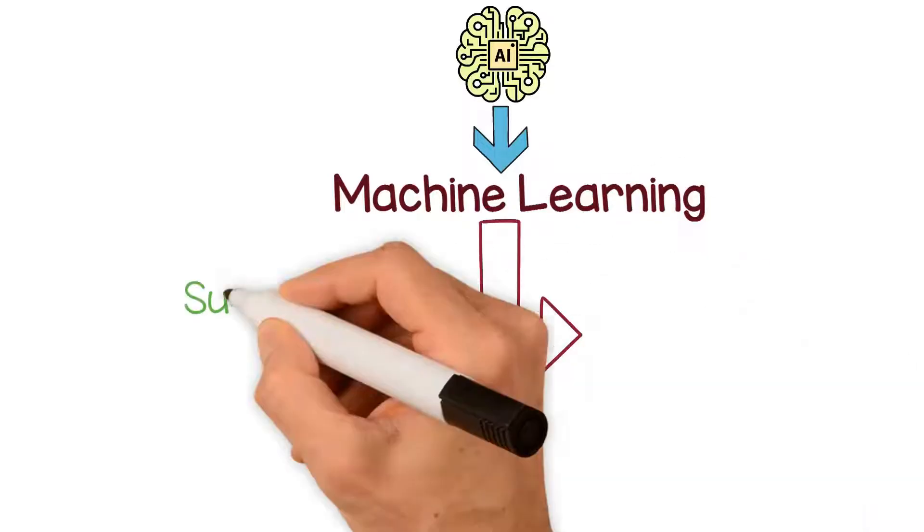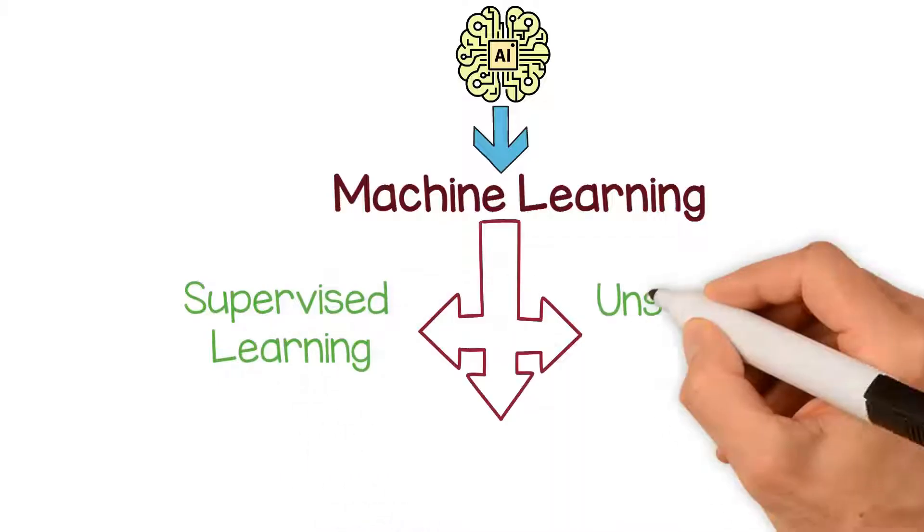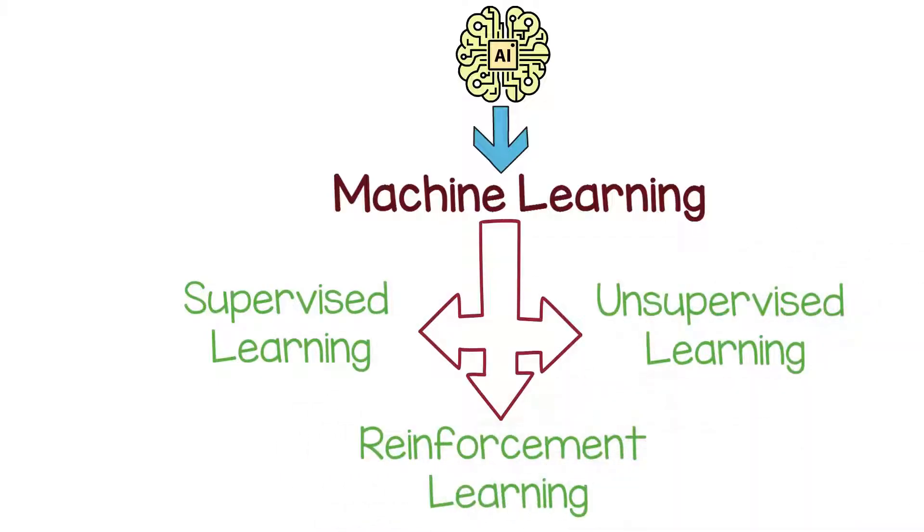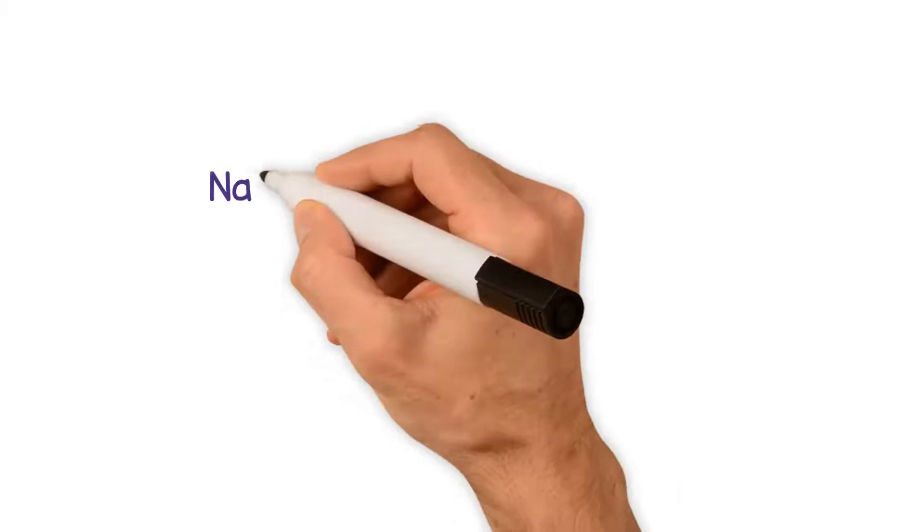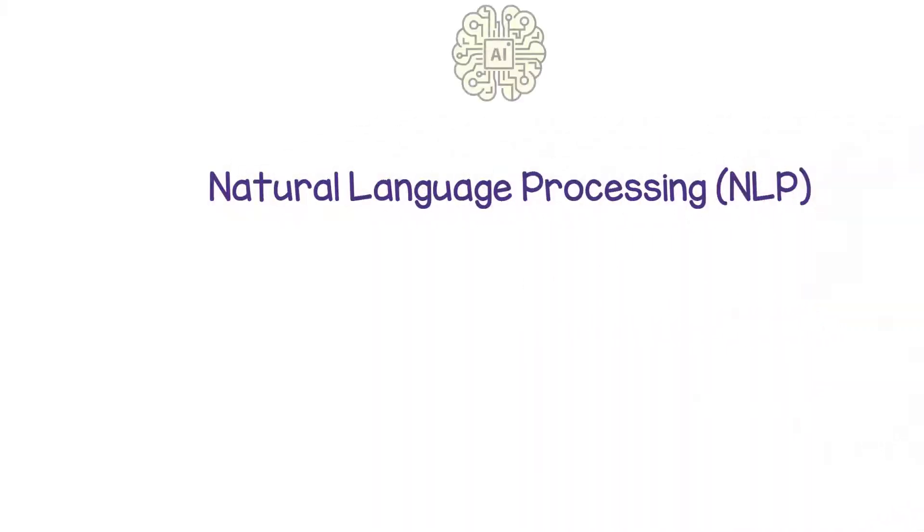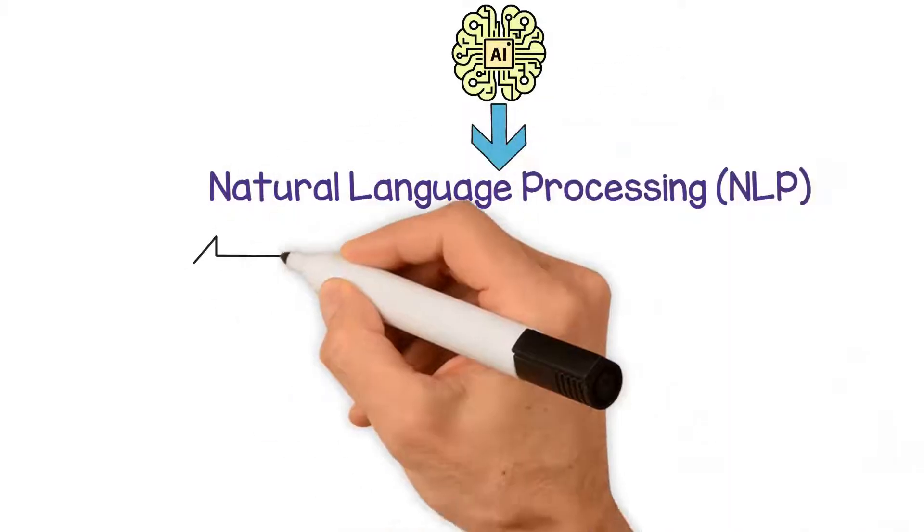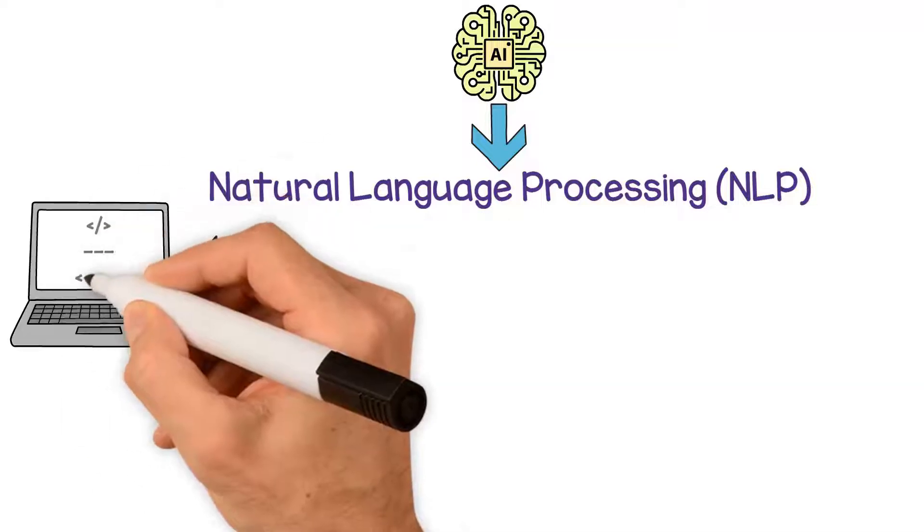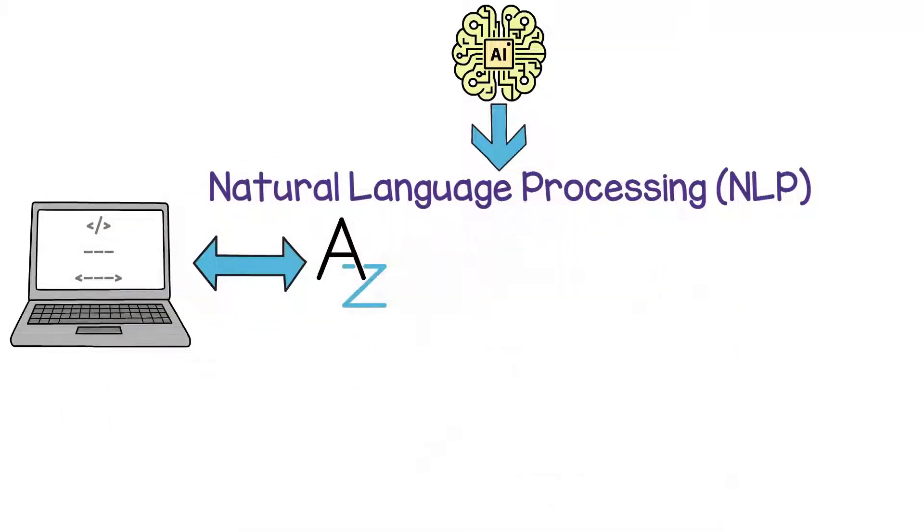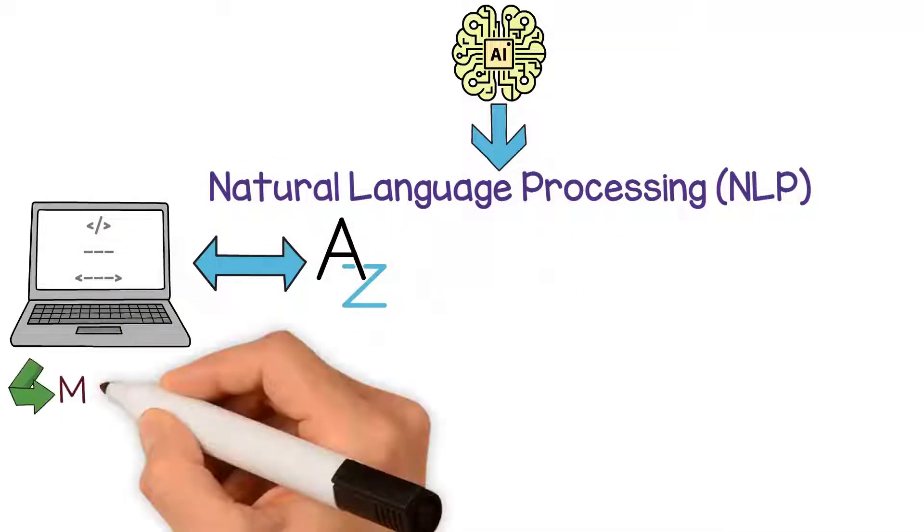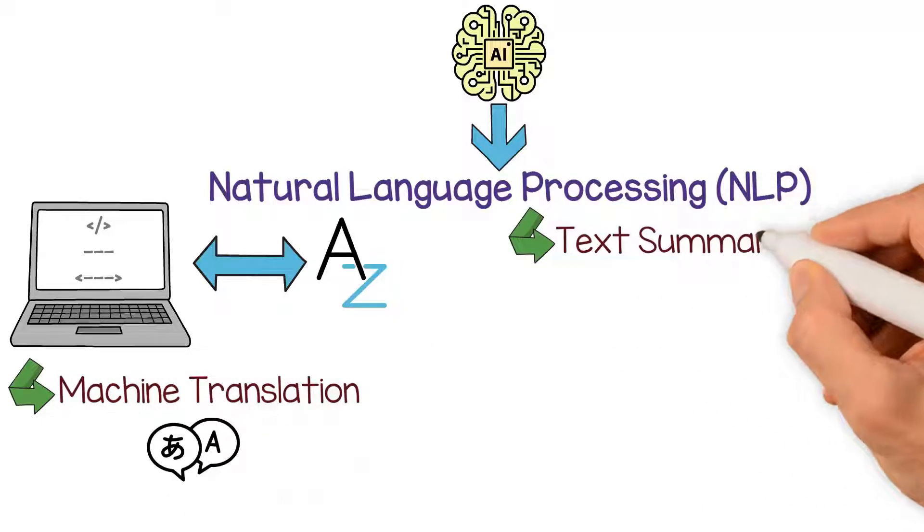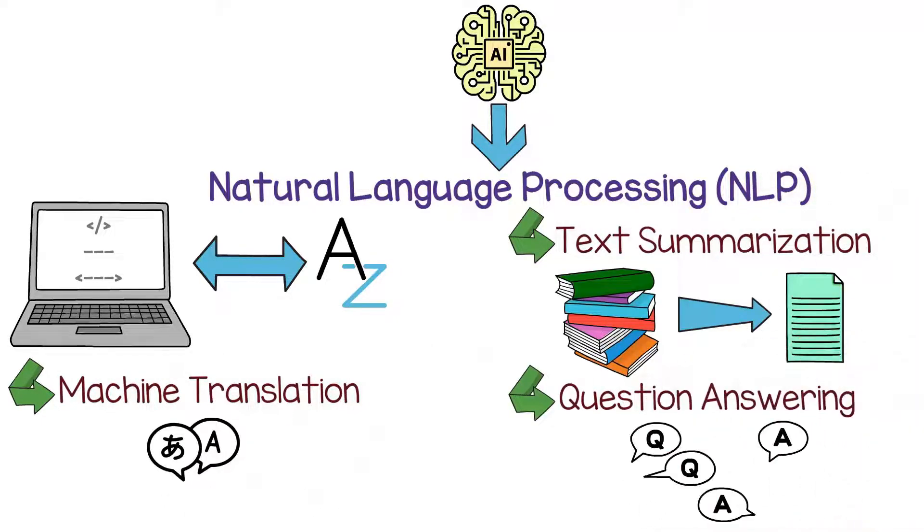Natural language processing, or NLP, is another subfield of AI that deals with the interaction between computers and human language. NLP is used in a wide range of applications such as machine translation, text summarization, and question answering.